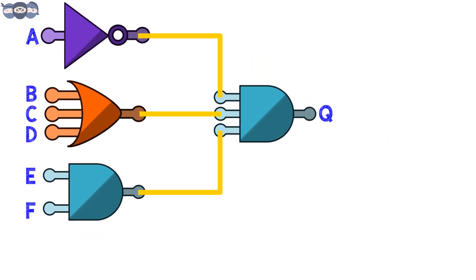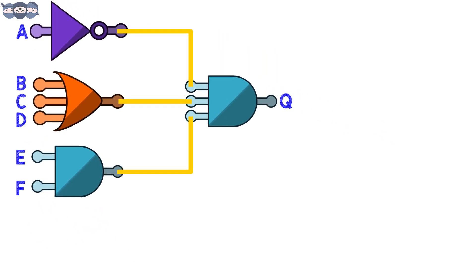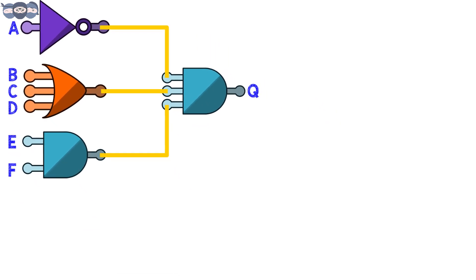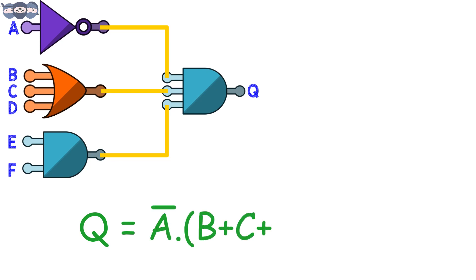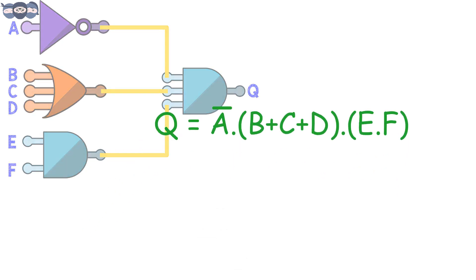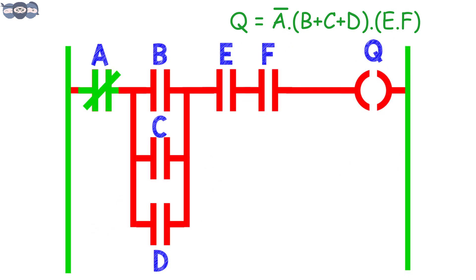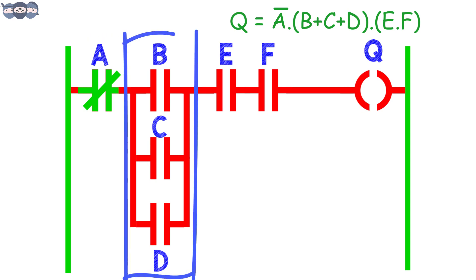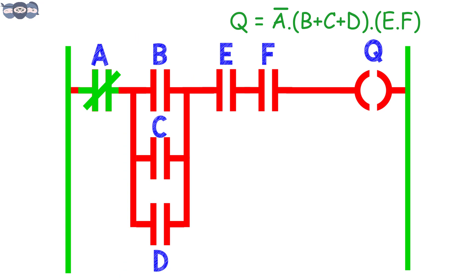Looking at the boolean logic, let us first write the expression. The boolean equation is q = ā AND (b OR c OR d) AND e AND f. The ladder logic for the equation is as follows. Here we can see that an NC (normally closed) contact is used for input a. Inputs b, c and d are connected in parallel, which forms OR logic. Inputs e and f are connected in series.